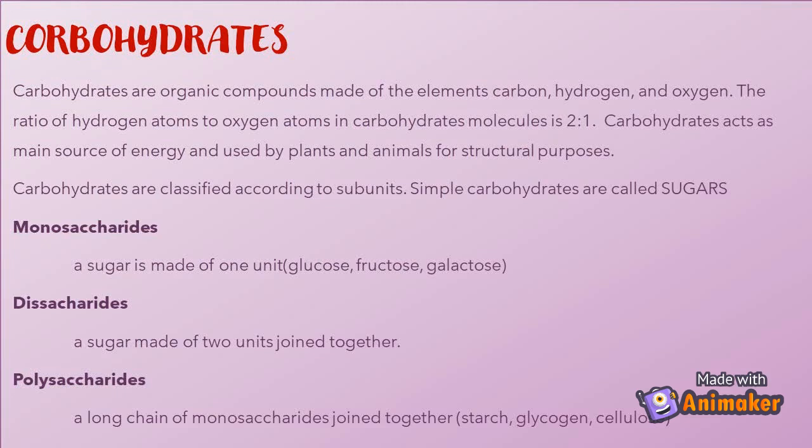Carbohydrates are classified according to subunits. Simple carbohydrates are called sugars. Monosaccharides are sugars made of one unit — examples include glucose, fructose, and galactose. Disaccharides are sugars made of two units joined together. Polysaccharides are long chains of monosaccharides joined together — examples include starch, glycogen, and cellulose.